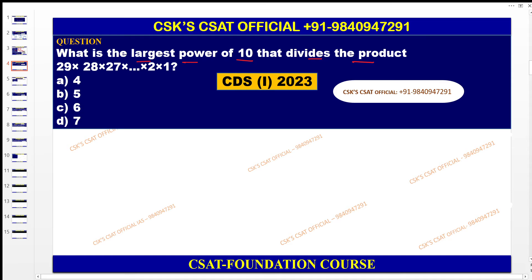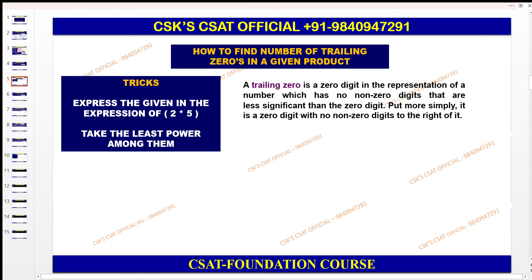Here you need to find out the number of zeros — trailing zeros. For that, you have learned this in your foundation class. Here I will give you a revision. You can see how to find the number of trailing zeros in the given product. First of all, you need to know what is meant by trailing zeros.